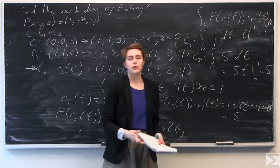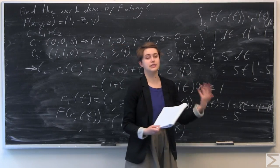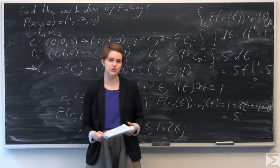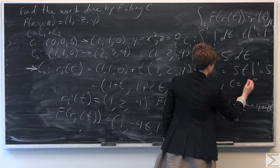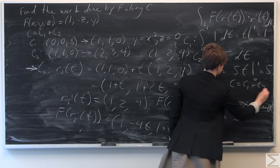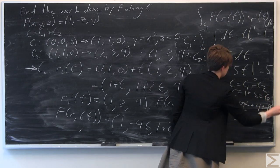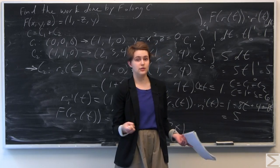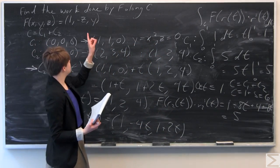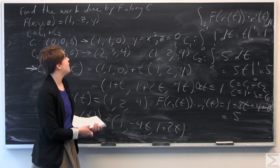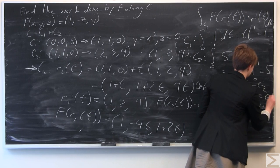Finally, the total line integral over C equals C1 plus C2 equals 1 plus 5 equals 6. Since work is measured in newtons times meters, our answer is 6 joules.